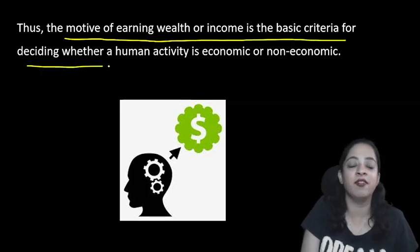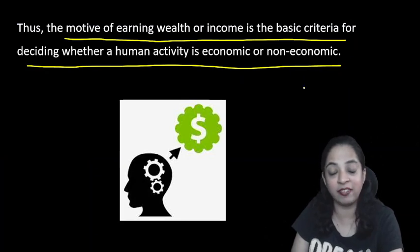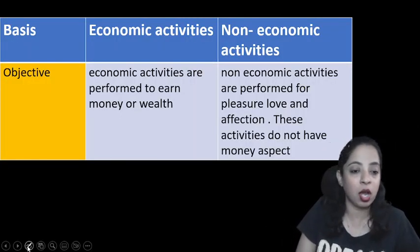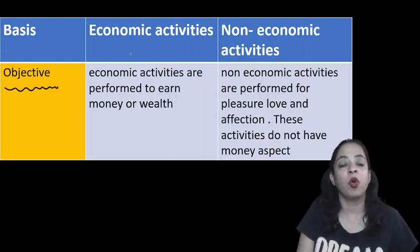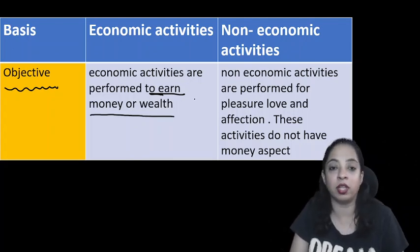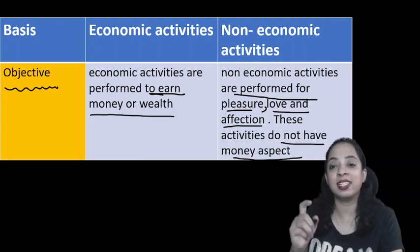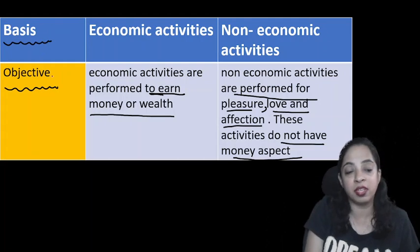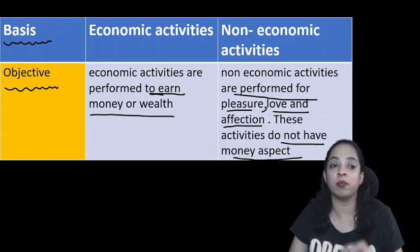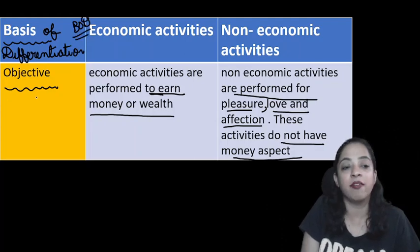Now let's differentiate between economic and non-economic activities point by point. In ICSC exams, you must write three columns including the basis of differentiation. The first basis is objective: the main objective of economic activities is to earn money or wealth, while non-economic activities are performed for pleasure, love, and affection — they have no money aspect.